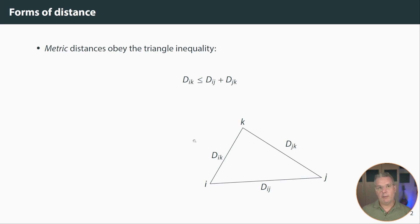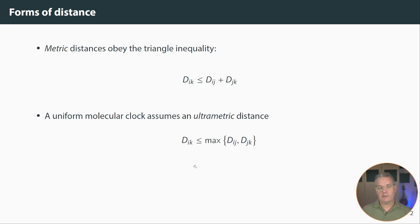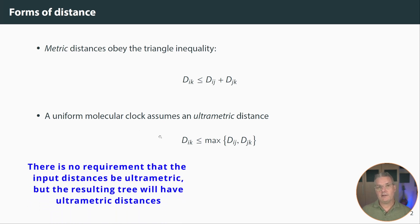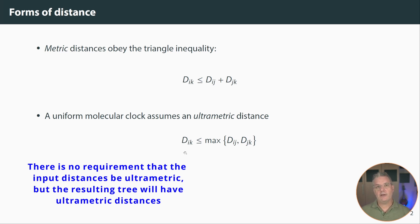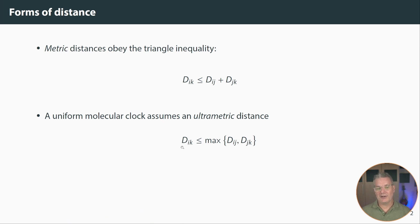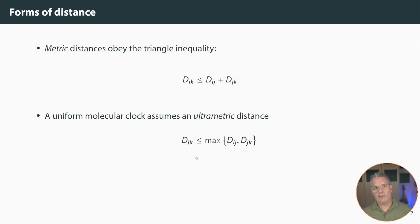In UPGMA, we use a special kind of distance called an ultrametric distance, and it obeys a different inequality. It's a little harder to understand because it doesn't have the familiar triangle to help us out. In this case, D sub ik is never greater than the maximum of the other two distances, and that's true for any combination of i, j, and k.